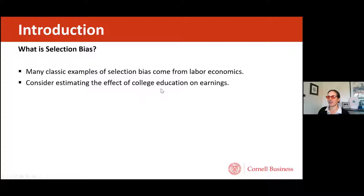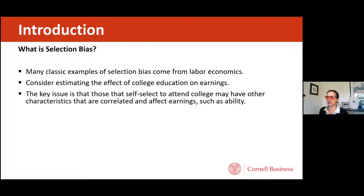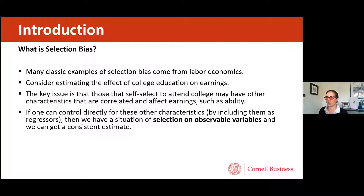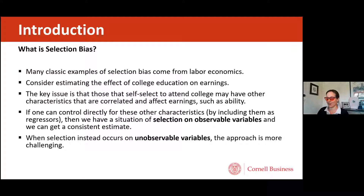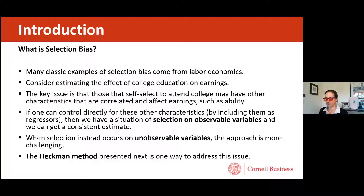The most classic examples come from labor economics — questions like what's the effect of college education on earnings. Folks self-select to attend college, and that may have other characteristics correlated with this self-selection decision that also affect earnings, such as abilities. If selection occurs on observable variables, you can control for those and get a consistent estimate. But if selection occurs on unobservable variables, you face a more challenging situation, which is where the Heckman method helps.